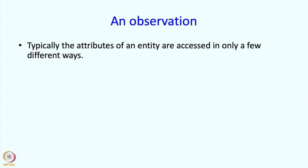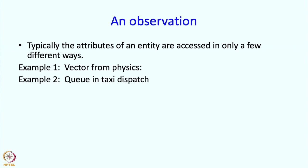Well now here is an observation about how such entities are processed. So typically there may be many attributes that an entity might have but they are accessed in only a few different ways. So I am going to take two examples, one is a vector from physics and another is the queue that we had in the taxi dispatch problem that we saw earlier. So in both these cases the vector and the queue will have many attributes or many members.